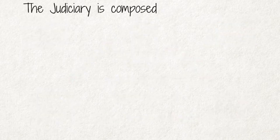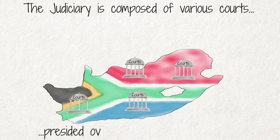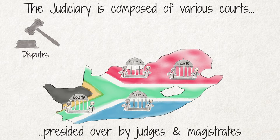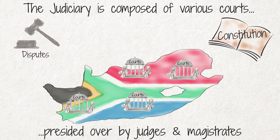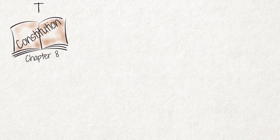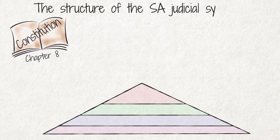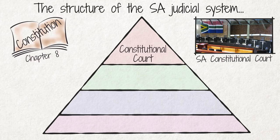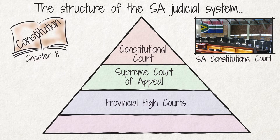The judiciary is composed of various courts across the country, presided over by judges and magistrates. The courts decide disputes and apply the constitution. Chapter 8 of our constitution defines the structure of the South African judicial system. At the top of the system is the Constitutional Court. Below it is the Supreme Court of Appeal and the various high courts in the provinces, presided over by judges.